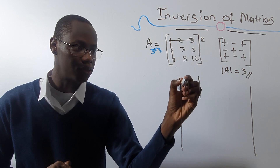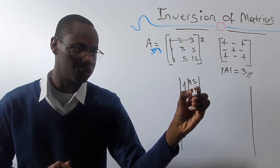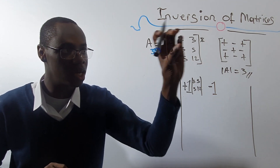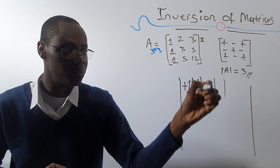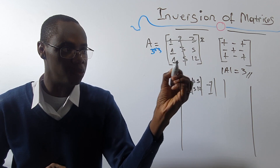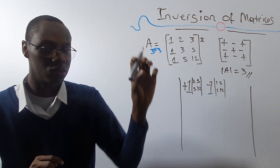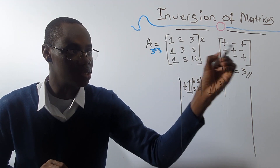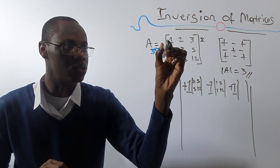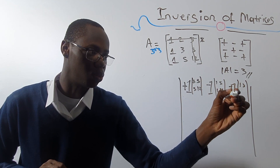Delete the row and the column — what's left is 3, 5, 5, 12. For the minus 1 position: delete the row and column associated with that 2, leaving 1, 5, 1, 12. For the element 3, the sign is plus 1, and getting the minor means deleting the row and column associated, leaving 1, 3, 1, and 5.